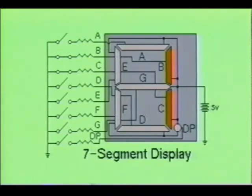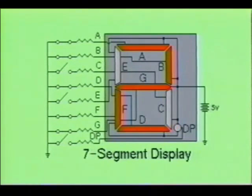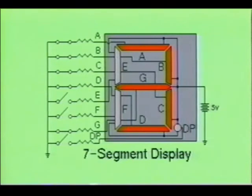For example, by activating segments B and C, the decimal number 1 is shown. By turning on segments A, B, D, F, and G, the decimal number 2 is displayed. Or by energizing segments A, B, C, D, and G, decimal number 3 can be displayed.